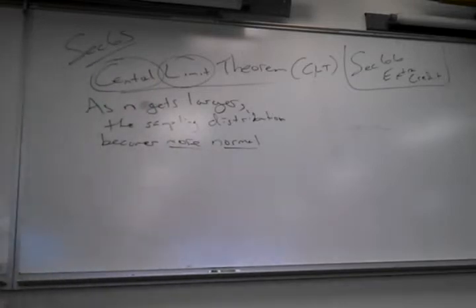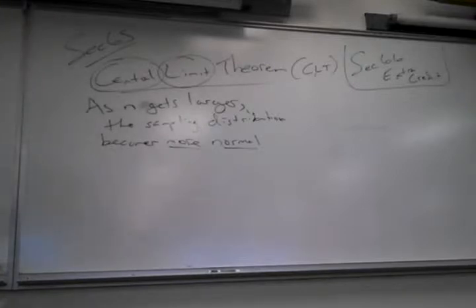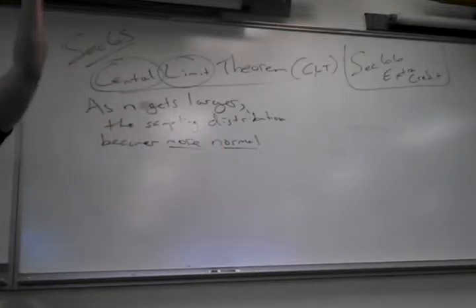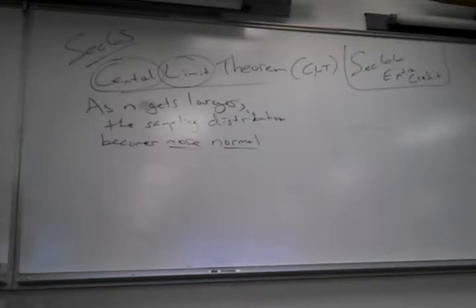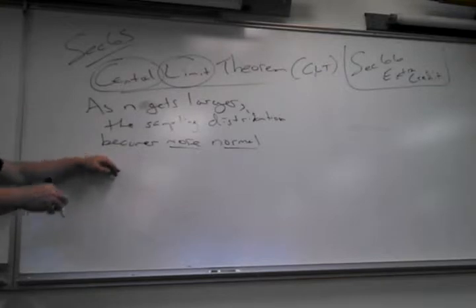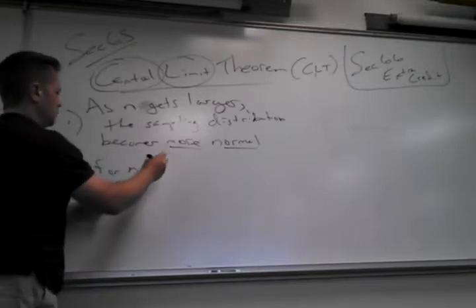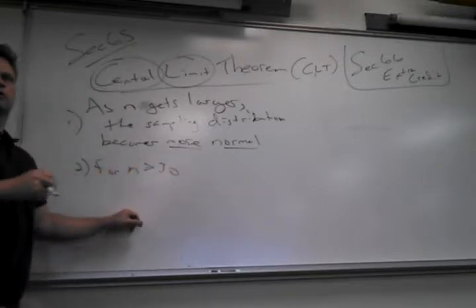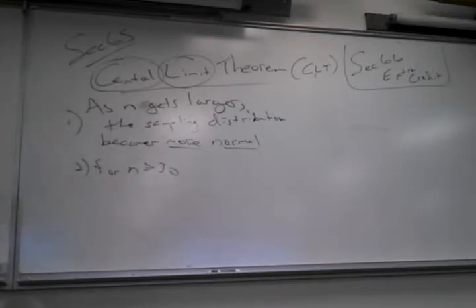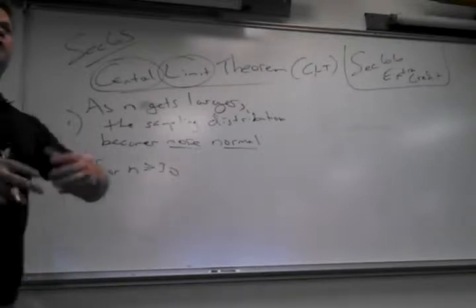Obviously, if it starts off normal, the sampling distribution will already be normal. If your distribution starts off normal, I don't care how big your sample is — it's going to look normal at the end. But here's the beauty: no matter how ugly the original distribution is, for n greater than or equal to 30, the sampling distribution will be normal enough.